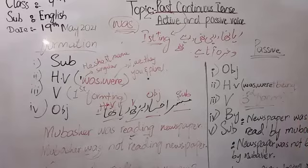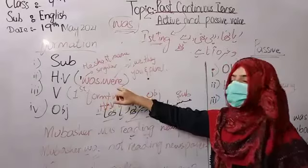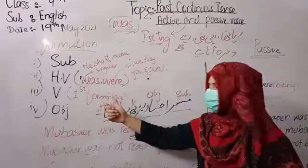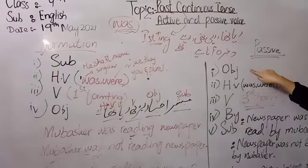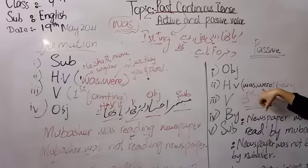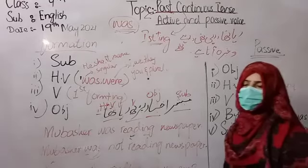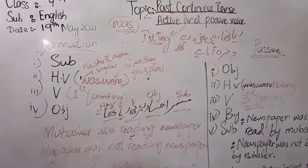So this was the past continuous tense — the formation of the tense: subject, helping verb, and object. The helping verb 'was/were' is used, and the verb uses first form plus -ing. For passive voice, the subject changes into object. If you haven't got clear about the past continuous tense, you can ask me and I'll explain with a new lecture. Take care.